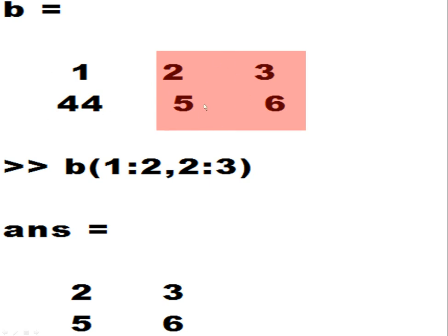So here's my target area in the b array. B, rows 1 and 2, comma, columns 2 through 3. There they are. And this is what I get: 2, 5, 3, 6.